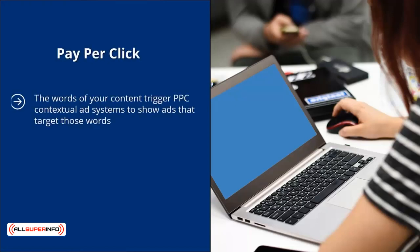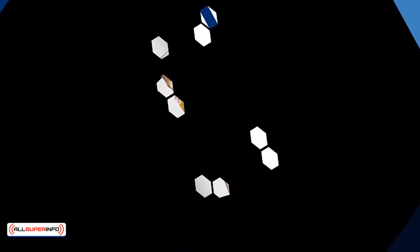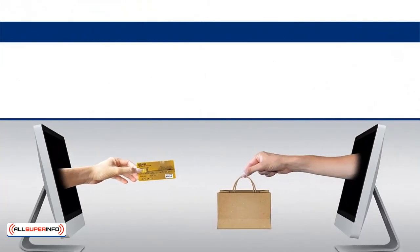Pay-per-click. The words of your content trigger PPC contextual ad systems to show ads that target those words. Native ads are not contextual. Instead, they use pictures that look like article thumbnails. When people click on the native ad, you get paid.